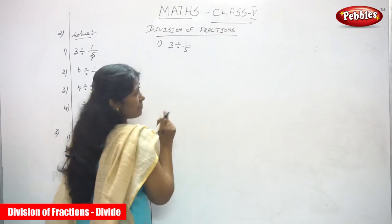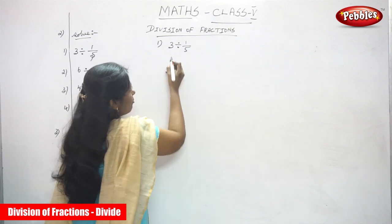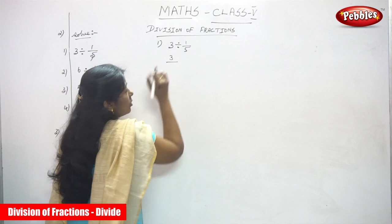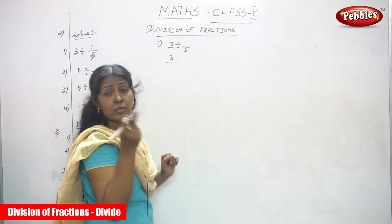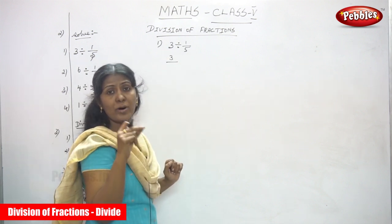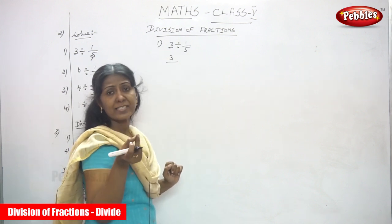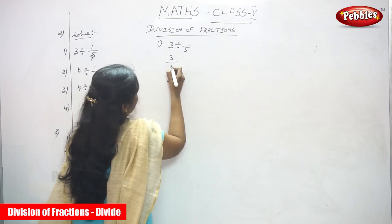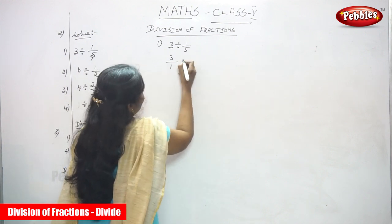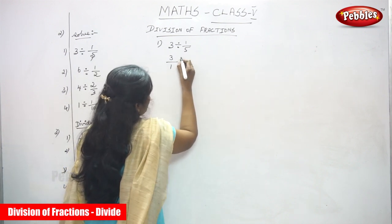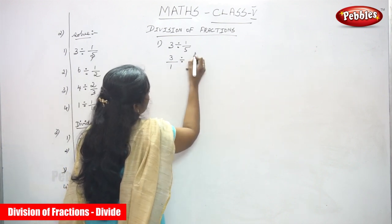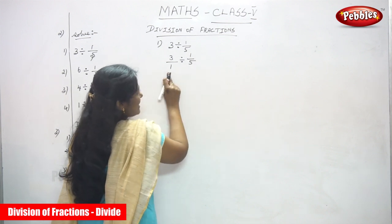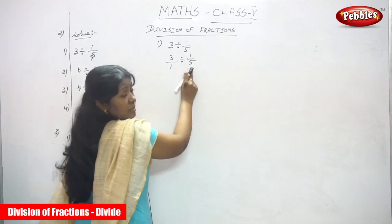First step: you have to make the whole number as a fraction. There is no denominator, so you have to consider 1 as a denominator. So 3 divided by 1, and then division, 1 by 5. So 1 by 5 is the dividend and this is the divisor.